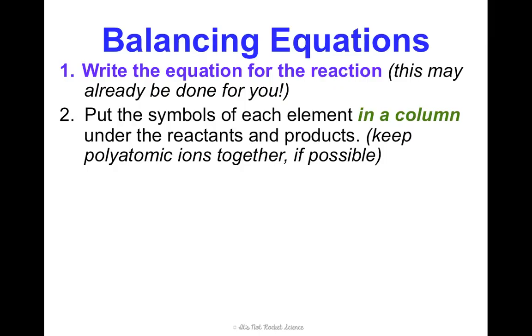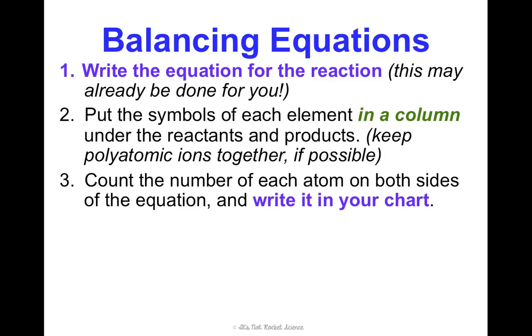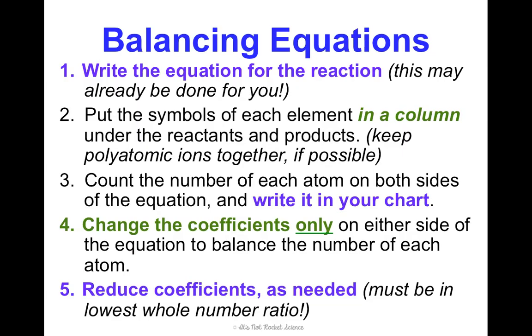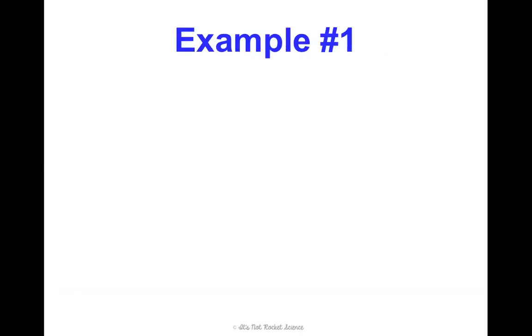Then, put the symbols of each element in a column under the reactants and products and keep your polyatomic ions together, if possible. Count the number of each atom on both sides of the equation and write it in your chart. Now, we're going to change the coefficients only on either side of the equation to balance the number of each atom. We'll reduce coefficients as needed when we get to the end because this needs to be in the lowest whole number ratio.